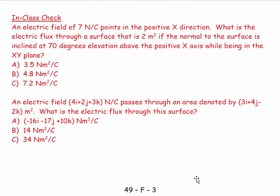Let's work a problem. An electric field of 7 newtons per coulomb points in the positive x direction. What is the electric flux through a surface of 2 square meters if the normal to the surface is inclined at 70 degrees elevation above the x axis in the xy plane?